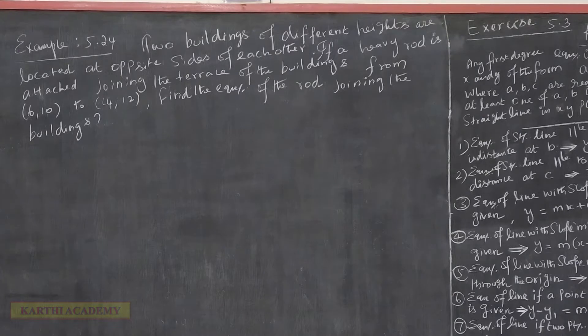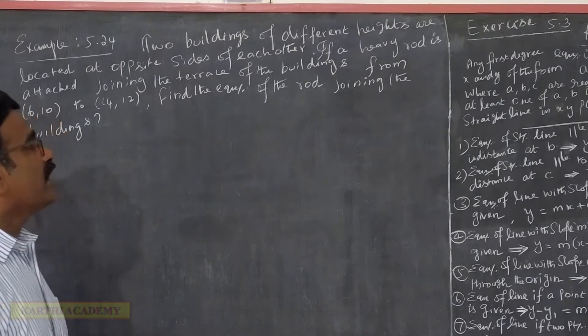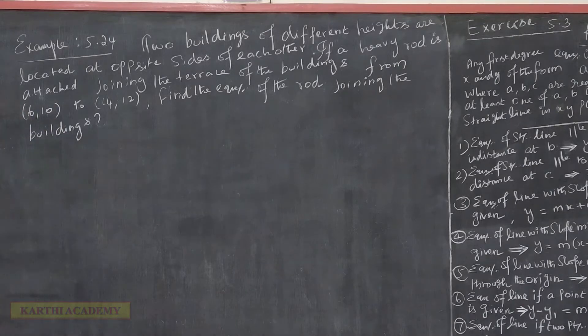Example 5.24: Two buildings of different heights are located at opposite sides of each other. If a heavy rod is attached, joining the terrace of the buildings from (6,10) to (14,12), find the equation of the rod joining the buildings.